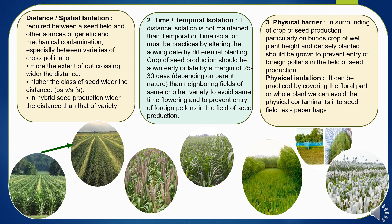For physical barrier isolation, in the surroundings of the seed production crop, particularly on bunds, crops of tall plant height and densely planted should be grown to prevent entry of foreign pollens. Physical isolation is also practiced by covering the floral part or whole plant to avoid physical contamination in seed production.